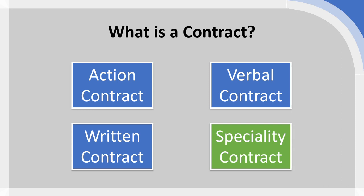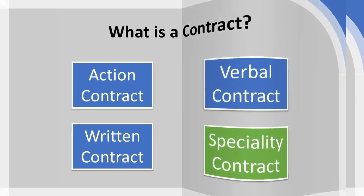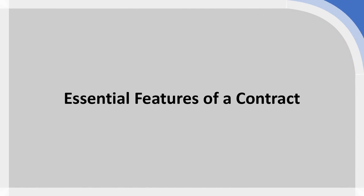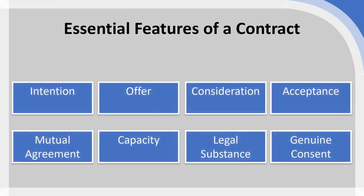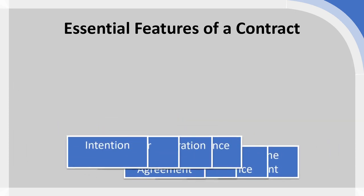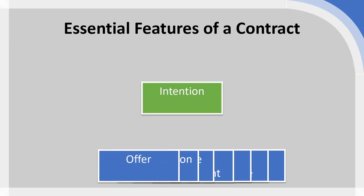That takes us through the different forms of contracts. Now we move on to the essential features of a contract. We have eight distinct features, all of which must be present during an agreement in order to make it legally binding and enforceable. The first would be intention. What we cannot do is try and trick somebody into a contract — that's not going to be enforceable. There has to be real intention by all parties to enter into the agreement.